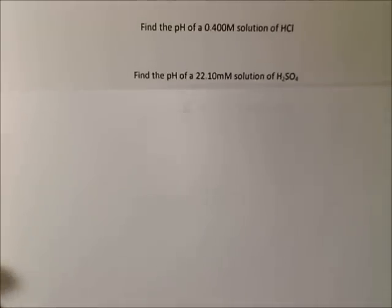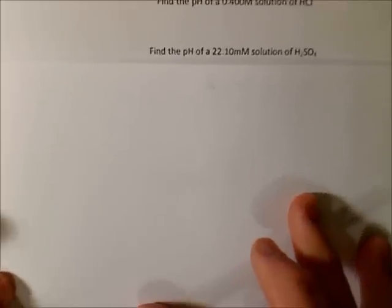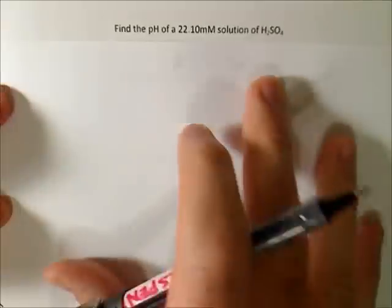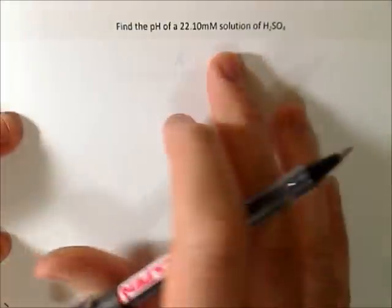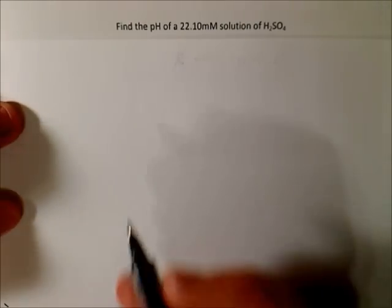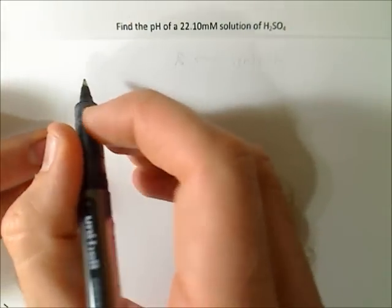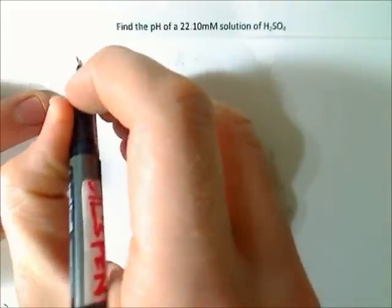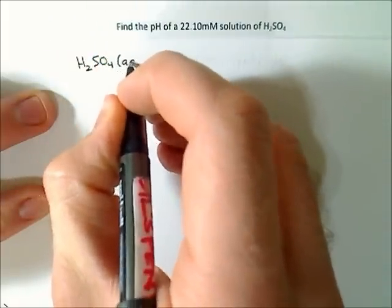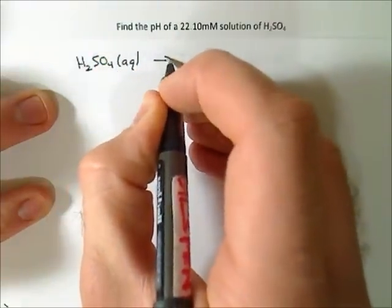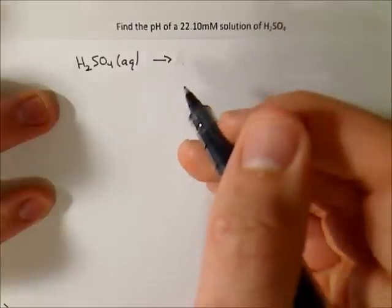Now, we can move on to a little harder one, the dissociation of another strong acid. And this is H2SO4, which we know is a strong acid. So we're going to write out the dissociation equation for it. And we use the single arrow rather than the equilibrium arrow.